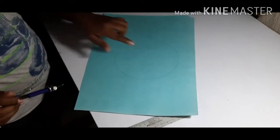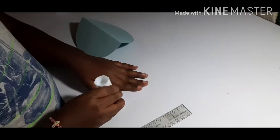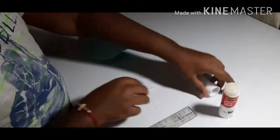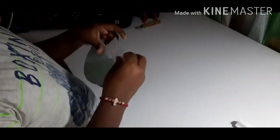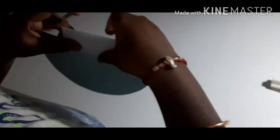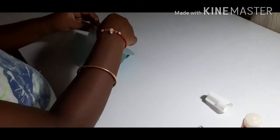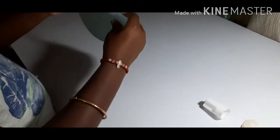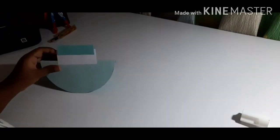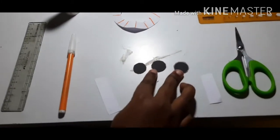After making a circle, cut it. Now I've cut it, fold it a little bit like this. Now I've cut three black dots for the windows using a straight line.